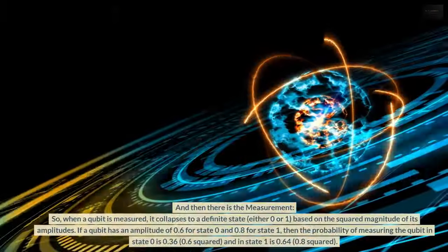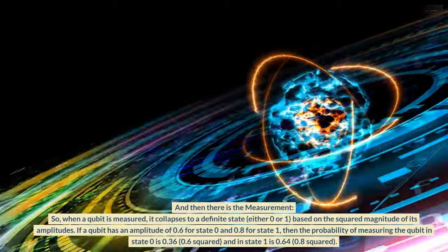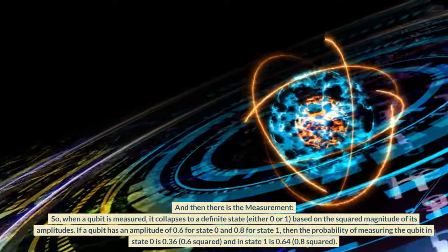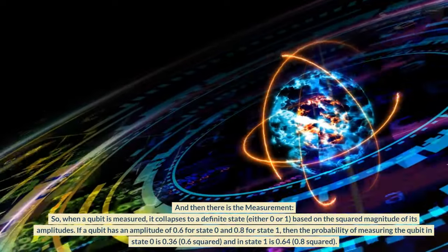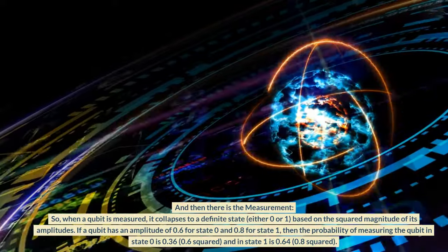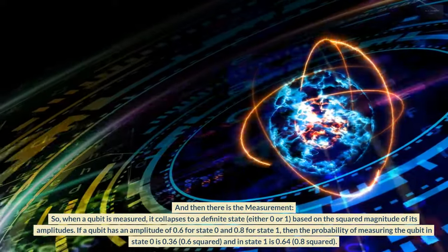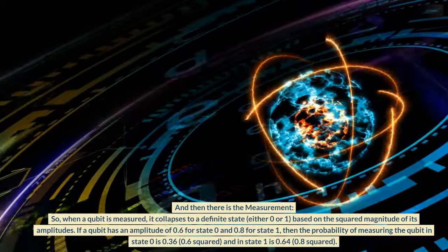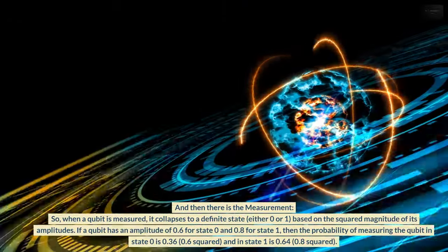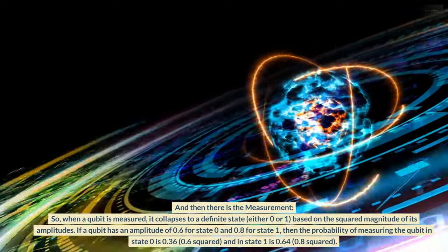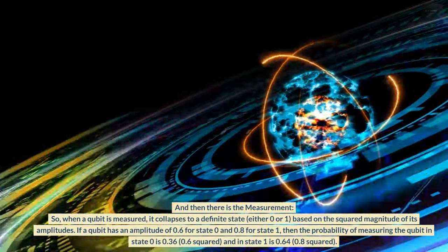And then there is the measurement. So when a qubit is measured, it collapses to a definite state, either 0 or 1, based on the squared magnitude of its amplitudes. If a qubit has an amplitude of 0.6 for state 0 and 0.8 for state 1, then the probability of measuring the qubit in state 0 is 0.36 (0.6 squared), and in state 1 is 0.64 (0.8 squared).